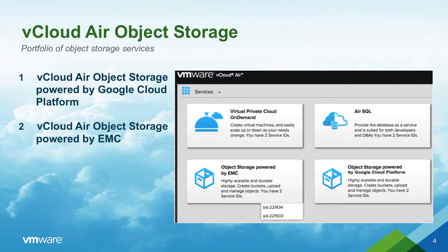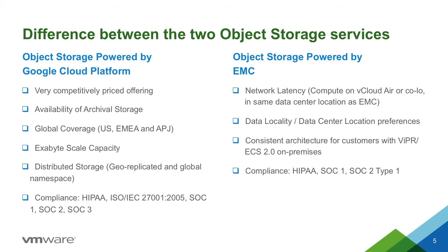vCloud Air object storage is a portfolio of object storage services, and there are two distinct services in this portfolio. The first one is vCloud Air object storage powered by Google Cloud Platform. The second one is vCloud Air object storage powered by EMC. Object storage powered by Google Cloud Platform is a price-competitive service that is available globally, and it's best fit for use cases such as backup, archiving, imaging and media, etc. The service has an archival storage option called Nearline, and it also has built-in CDN.